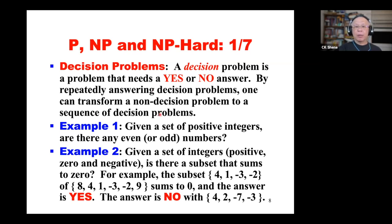Let's take some examples. Given a set of positive integers, are there any even numbers? To solve this decision problem is rather easy — you check if each element is even. If every number tested is not even, you know there's no even number in the data set.